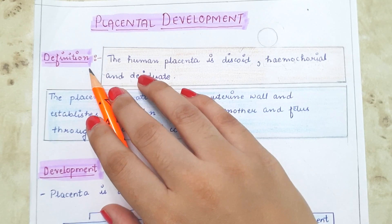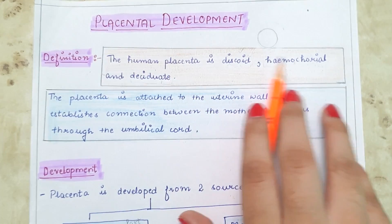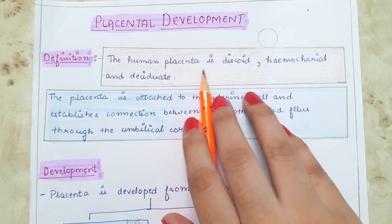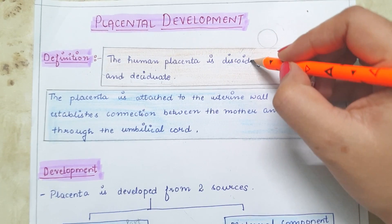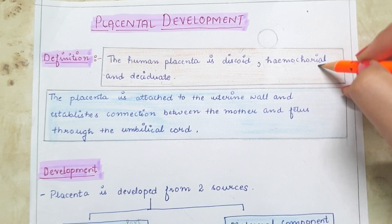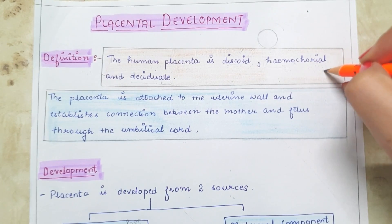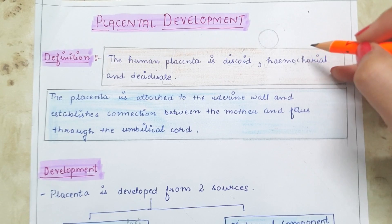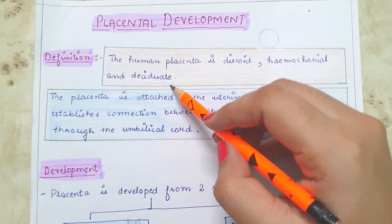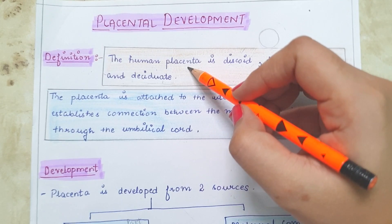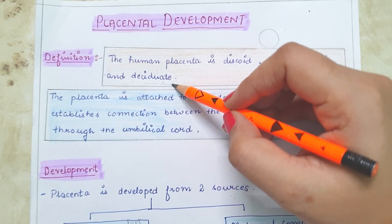Starting the lecture with the definition of placenta. The human placenta is discoid, hemochorial, and deciduate. It is discoid because of its disc-like shape. It is hemochorial because maternal blood is in direct contact with the chorion. It is deciduate because during delivery some maternal tissues shed along with the placenta.